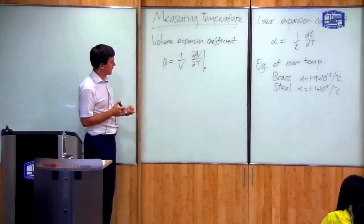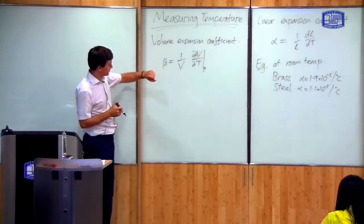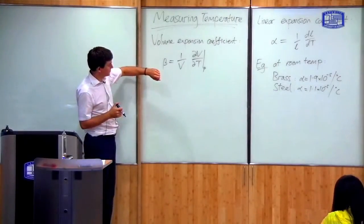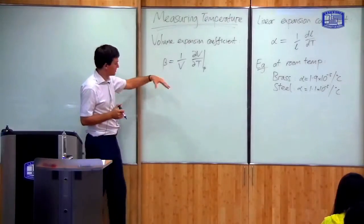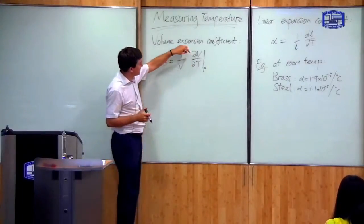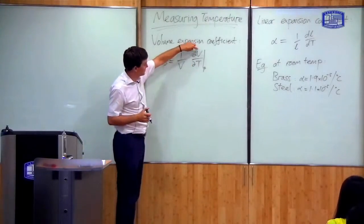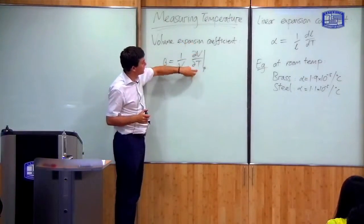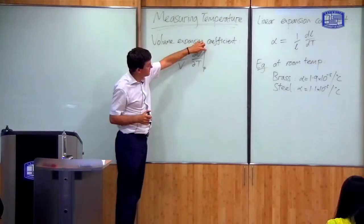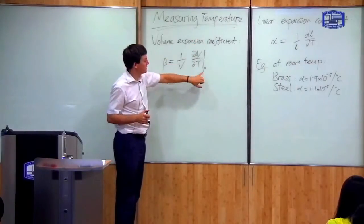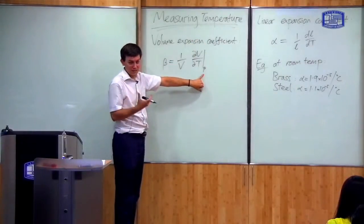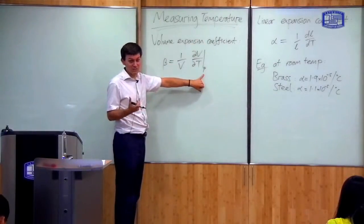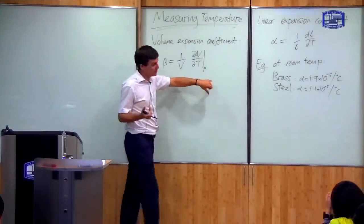We define the volume expansion coefficient in exactly the same way as we defined the linear expansion coefficient for solids. The volume expansion coefficient — I give it the symbol beta — is one over the volume times the partial derivative of volume with respect to temperature when you hold the pressure constant. I use the notation of a partial derivative with a P at the bottom to indicate that the pressure is held constant. As we do the expansion, we keep the force constant, and that keeps the pressure of the gas constant.